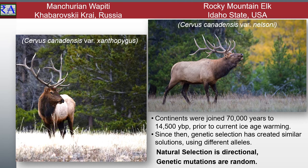Remember, viable offspring require production of offspring who can also successfully reproduce. Just because offspring are made, it does not mean that they can also reproduce. Think about mules for this hybrid situation.